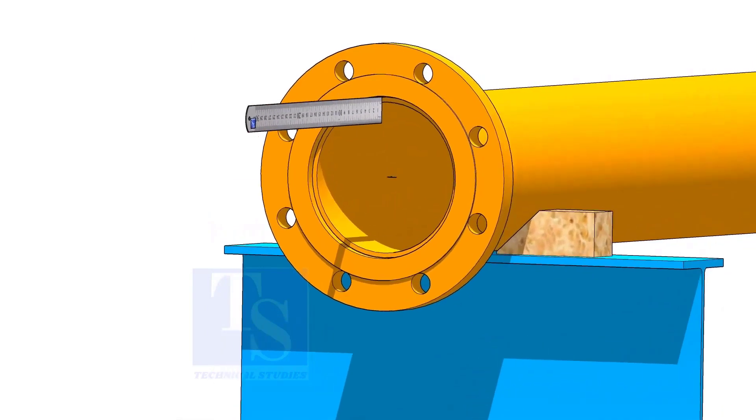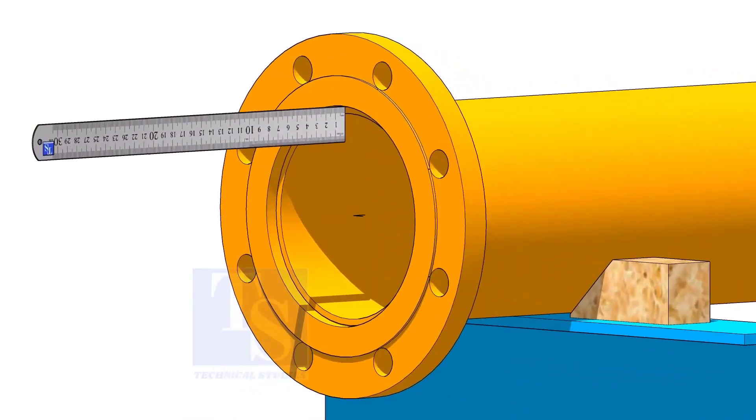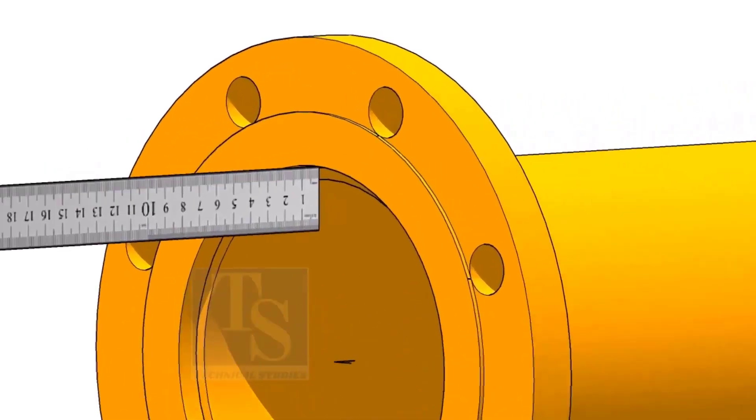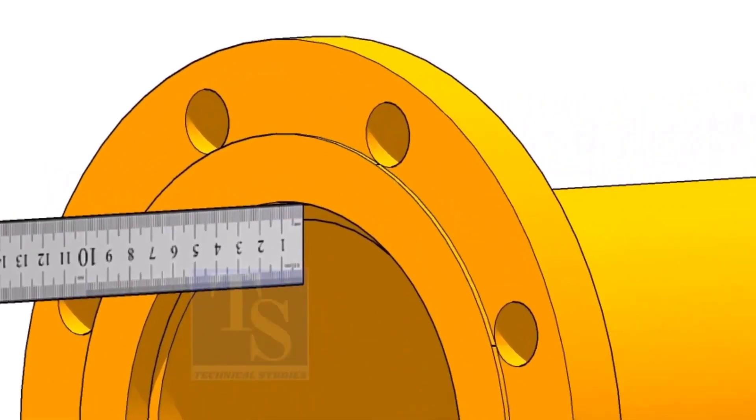The pipe face to the flange face clearance shall be the minimum thickness of the pipe. Assume that the thickness of the pipe is 6 mm. The clearance shall be a minimum of 6 mm.